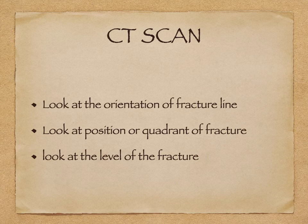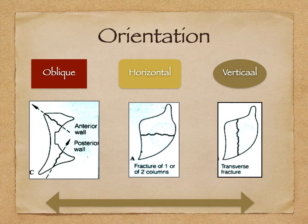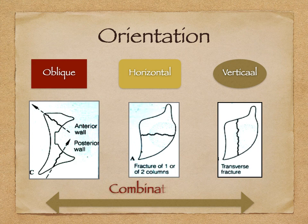Once we have looked at the x-ray, we go on to the CT scan. People find it difficult to interpret CT scans, but if you follow some simple rules you will be able to identify and interpret them very well. There are three things to look at: one is the orientation of the fracture line, second is the position or quadrant of the fracture, and third is the level of the fracture in the different sections. An oblique orientation indicates a wall fracture, a horizontal fracture line suggests a column fracture, and a vertical fracture line suggests a transverse fracture.